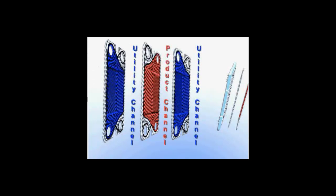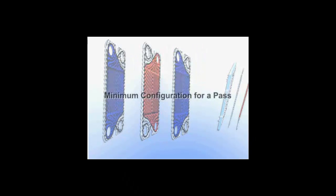There are two utility fluid channels for every product channel. This is the minimum configuration for a pass, although a typical pass has many more channels.